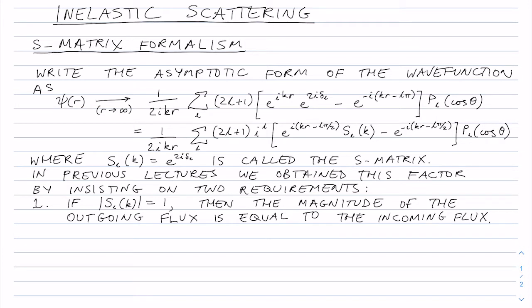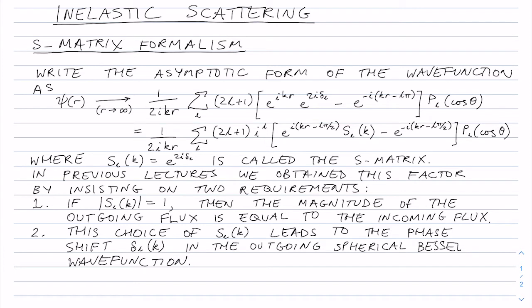So we were able to obtain the factor S L equals e to the 2 i delta l by insisting on, firstly, that the magnitude of the incoming and outgoing fluxes were equal. This was the particle or probability conservation law that we used. And the second thing is that if we did use this particular choice of S L K and wrote that as e to the 2 i delta l, then that led to a phase shift of delta l in the outgoing spherical Bessel wave function, which is why we chose to have that particular phase factor.